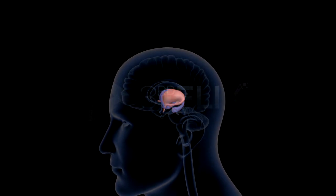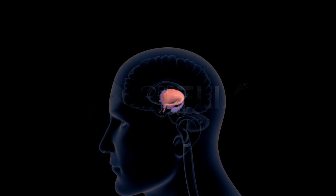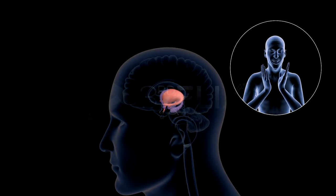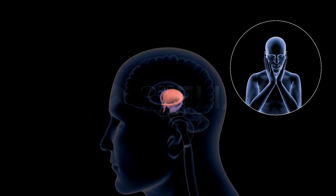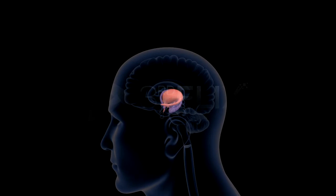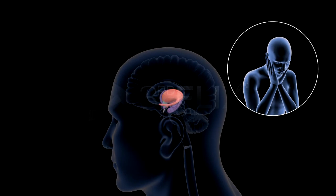The limbic system is involved in the regulation of sexual behavior and expression of emotions. The limbic system, along with the hypothalamus, is responsible for emotional responses.